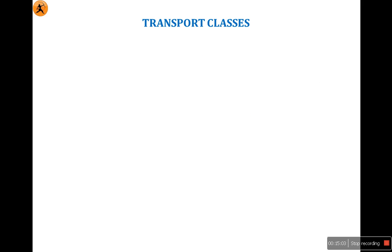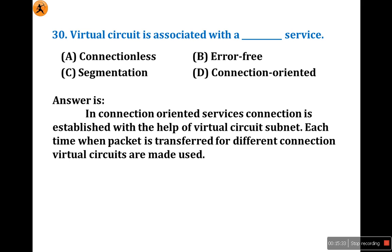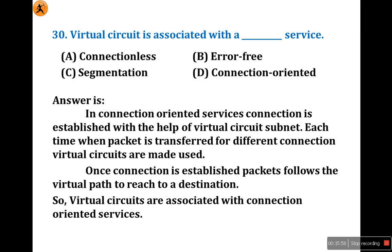Question 30: Virtual Circuit is associated with a ___ service. Virtual Circuit is associated with Connection-Oriented Service. Before looking at options, you should conclude your answer. Virtual Circuit is always associated with connection-oriented service. Connection is established with the help of Virtual Circuit Subnet. Each time when packet is transferred for different connection, virtual circuits are used.